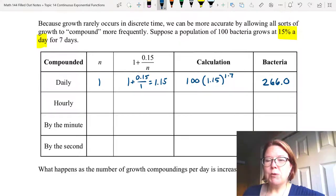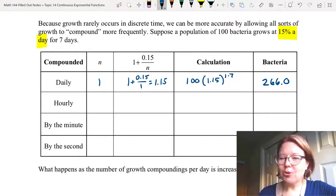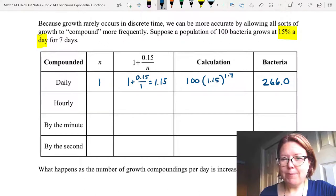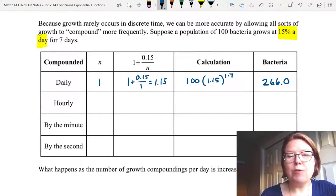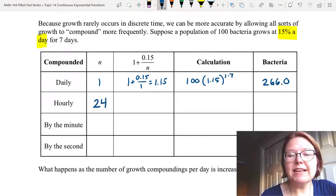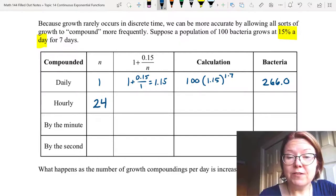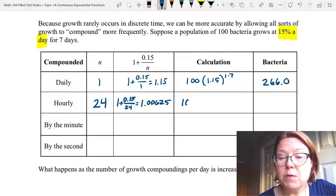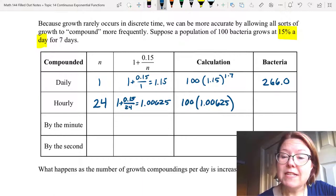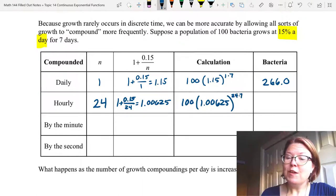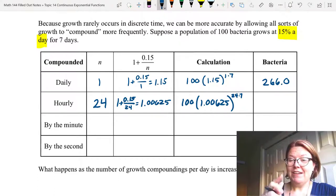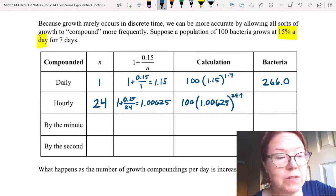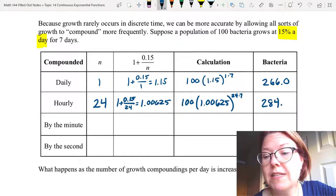I am going to go out to one decimal place, even though we can't have partial bacteria, because I want to show the growth as we move down this table. Let's look at hourly compounding. If we're compounding hourly, that means we're doing it 24 times a day. So our n is 24. To find the growth factor we would do 1 + 0.15/24, which gives us 1.00625. Our calculation would then be 100 times (1.00625), and then we're going to raise that to the 24 times 7 power, because we have 24 compoundings per day and we're doing it for seven days. The result here is 284.8 bacteria.